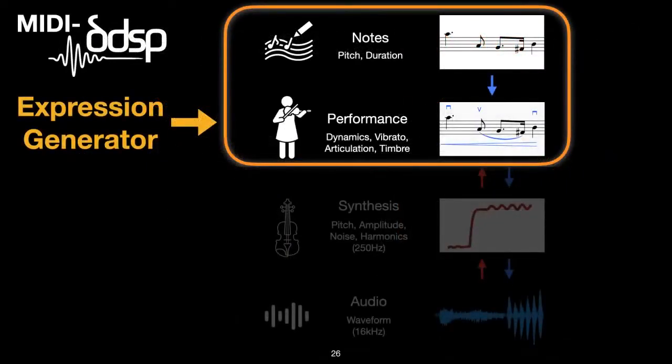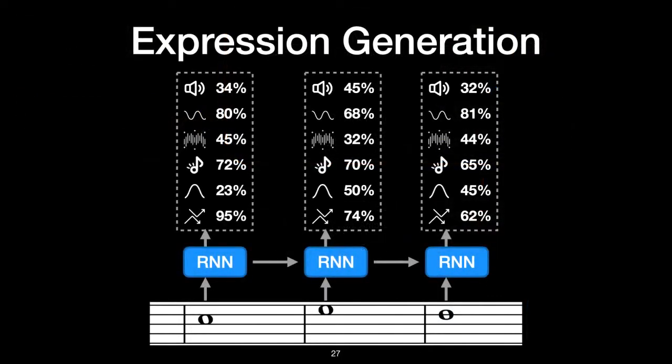So the final piece is the expression generator, which will generate performance characteristics by controlling those note expression summary statistics I just described. Because the previous module, the note expression module, does most of the heavy lifting here, the generation of these six expression controls per note is actually relatively simple. We simply use another autoregressive RNN to predict the six dimension note values for each note.